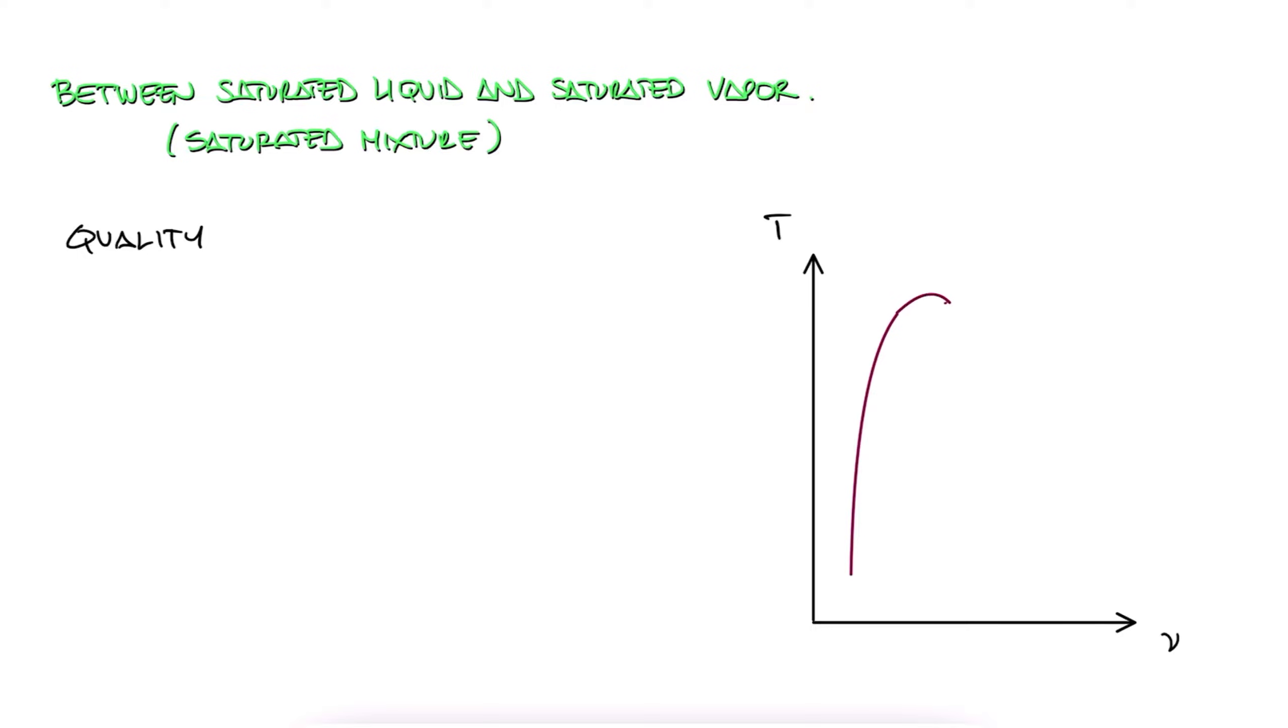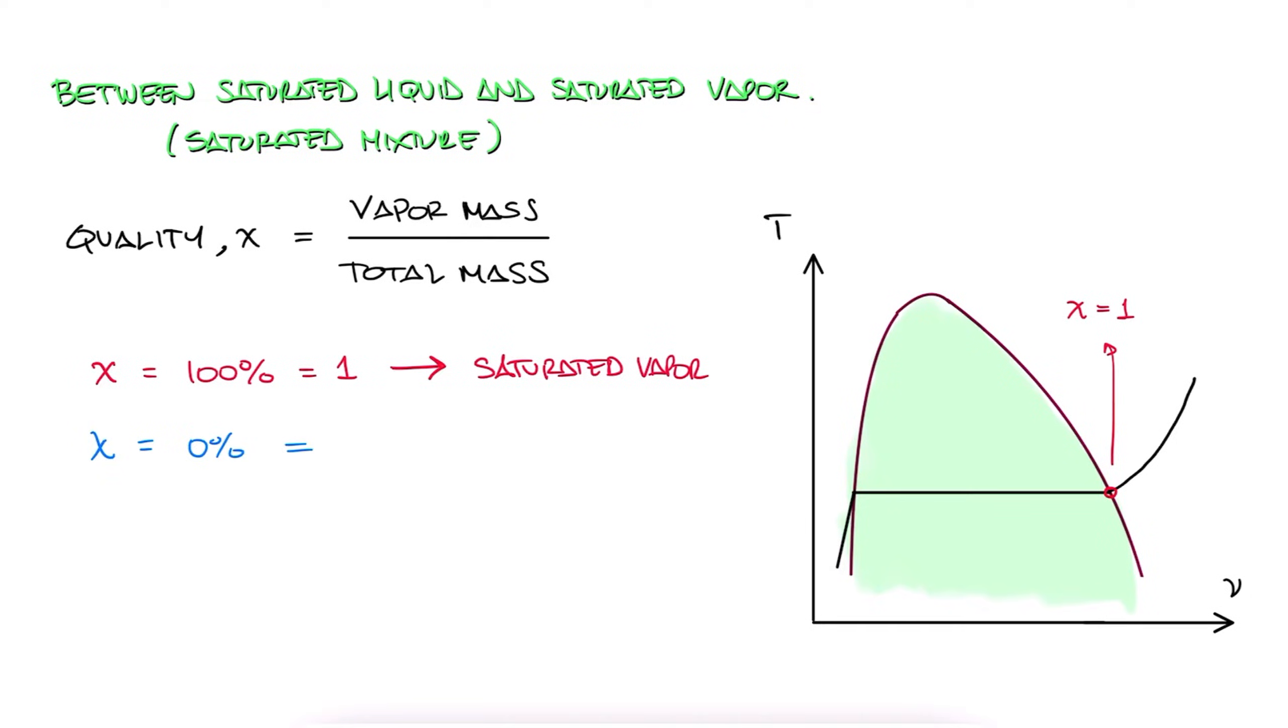Now, what about the values that are between the saturated liquid and the saturated vapor, or what is the same, the saturated mixture region values? Quality is the property that helps us identify where along the path inside the saturated dome we are. We use the variable x for it, and it's defined as the mass of vapor relative to the total mass. This implicitly means that a quality of 100% or 1 is all vapor, meaning saturated vapor. And of course, if quality is zero, mass of vapor is zero, meaning it's all liquid. Saturated liquid is therefore zero quality.